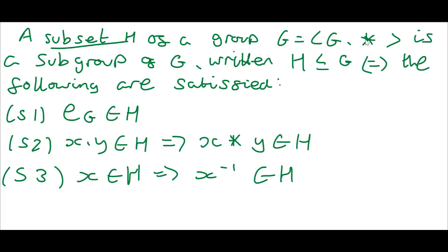H has to have the same binary operation. The proof is pretty simple - in proving a subset is a subgroup, you just follow these three axioms. We'll do some examples of this in the upcoming videos.